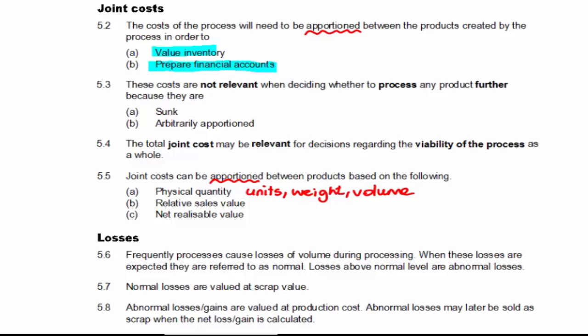We might use relative sales value. In other words, if we've got more sales proceeds from each of the products, then we're going to charge them with more of the joint cost. Or we might use net realizable value, which just looks at the proceeds of each, but minus any further costs of getting them into that saleable condition.